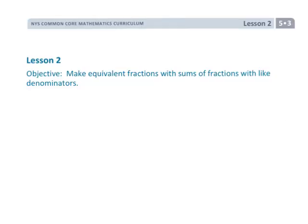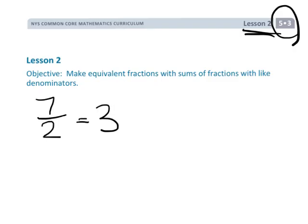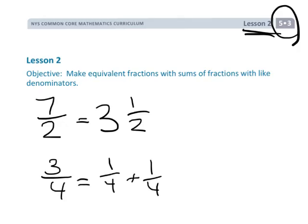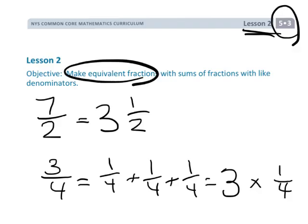That is 5th grade module 3 lesson 2, where we use number lines to take improper fractions like 7/2 and turn them into a whole number plus a fractional part. We're also showing that 3/4 equals 1/4 plus 1/4 plus 1/4, which is the same as 3 times 1/4. So a couple of different ways to write equivalent fractions.